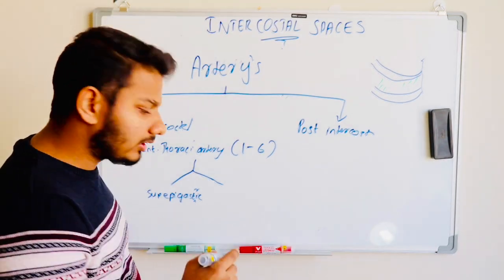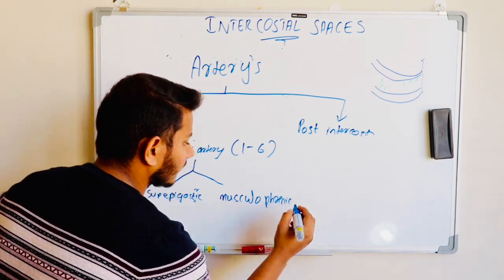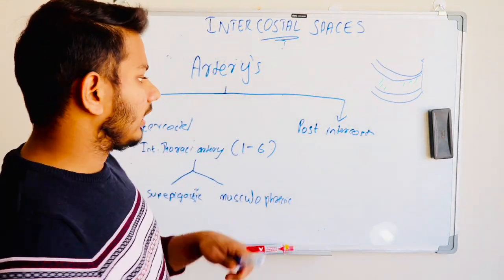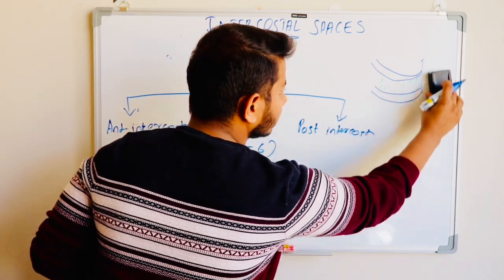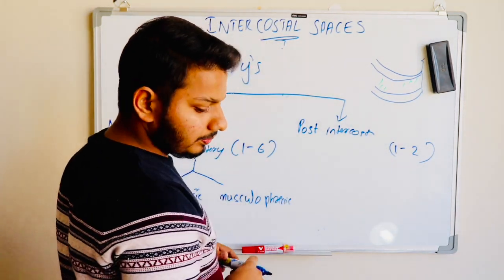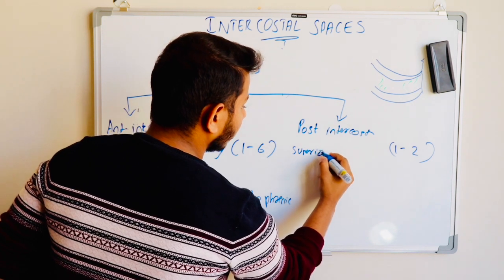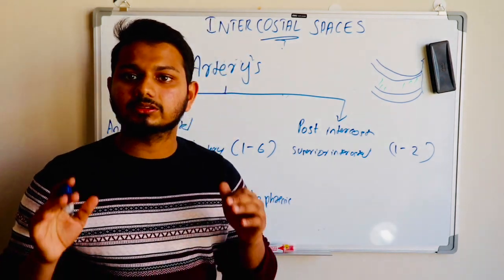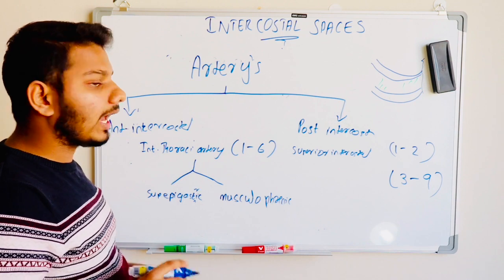We also have the phrenic artery, and both of these arteries supply the diaphragm. For the posterior intercostal artery: from intercostal space one to two, we have the superior intercostal artery, and from space three to nine, we have the descending aorta.